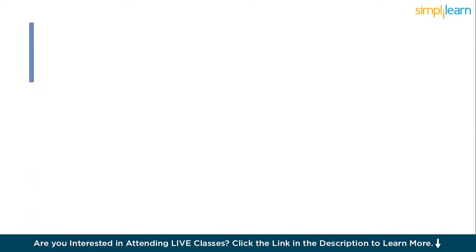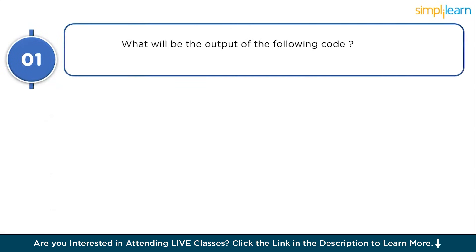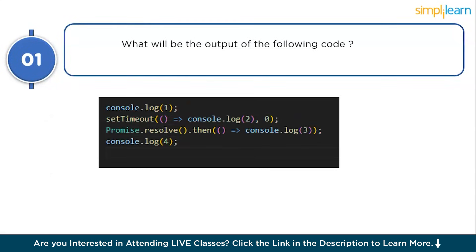Our first question: what will be the output of the following code? The code is: console.log(1), setTimeout(() => console.log(2), 0), Promise.resolve().then(() => console.log(3)), and console.log(4). Let's analyze the execution order. console.log(1) is a synchronous operation so it runs immediately — the first output is 1.